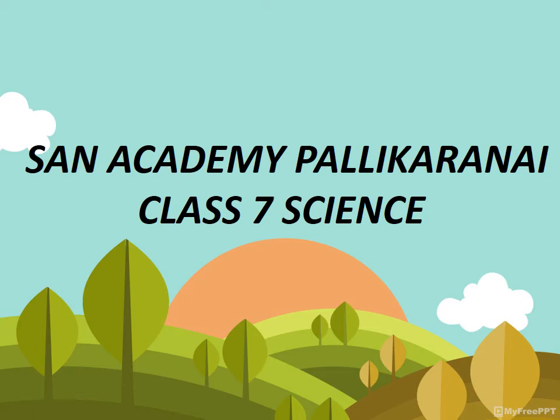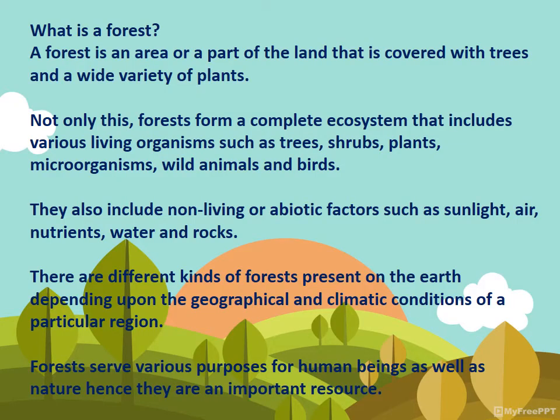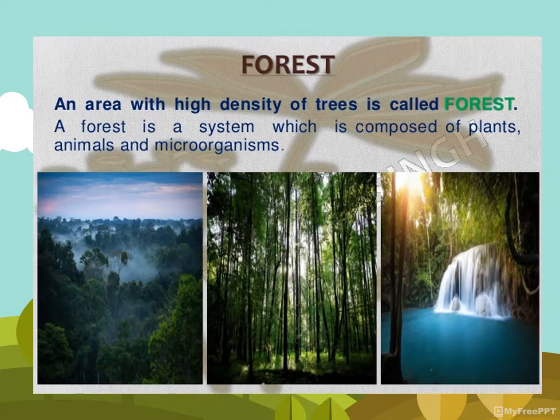Welcome children to San Academy. This is Class 7 Science, January month, Biology Chapter 17: Forest Our Lifeline. A forest is an area or part of land that is covered with trees and a wide variety of plants. Forests include biotic and abiotic factors. Biotic factors include plants, animals, and microorganisms. Abiotic factors include sunlight, air, water, and rocks. These make up the forest habitat.